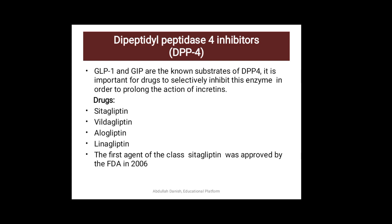DPP-4 inhibitors work in relation to GLP-1. The enzyme DPP-4 is active and degrades GLP-1. The substrate of DPP-4 includes GLP-1, and when active, DPP-4 breaks down GLP-1, reducing its availability.